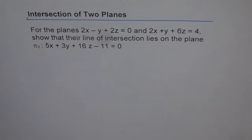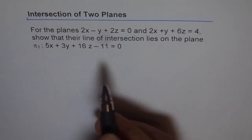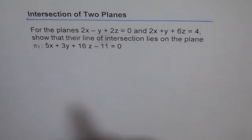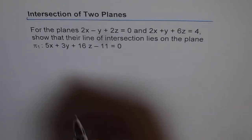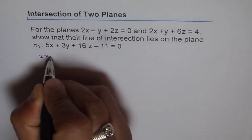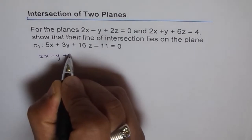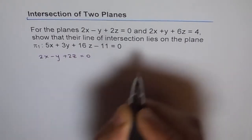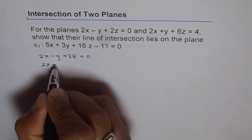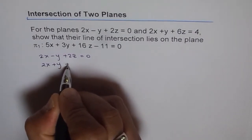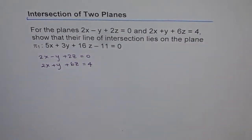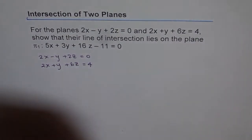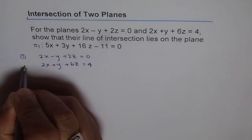For this kind of a problem, what we should do is find first the line of intersection of these planes. We have equation 1 which is 2x minus y plus 2z equals to 0, and equation number 2 which is 2x plus y plus 6z equals to 4.